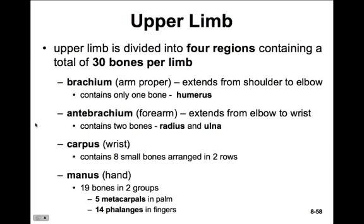The upper limb is divided into four regions and contains a total of 30 different bones in each limb. The brachium is the upper arm, extending from the shoulder to the elbow — it contains only one bone, the humerus. The antebrachium is the forearm, extending from the wrist to the elbow, containing two bones: the radius and the ulna. The carpus is the wrist, with eight small bones arranged in two rows. And the manus is the hand, with 19 bones — five metacarpals forming the palm, and 14 phalanges forming the fingers.